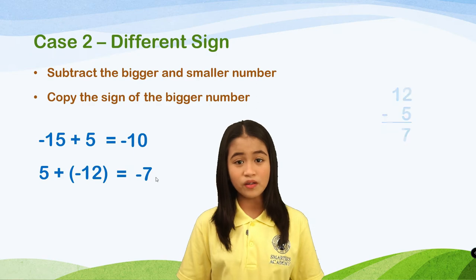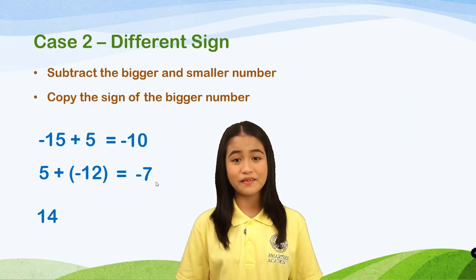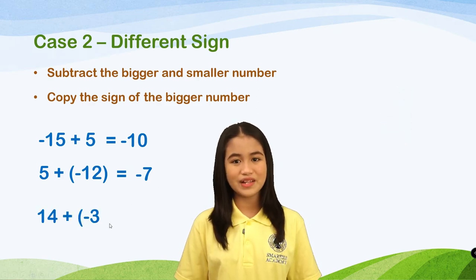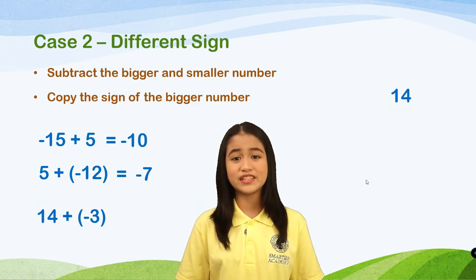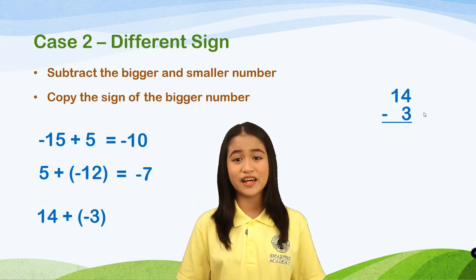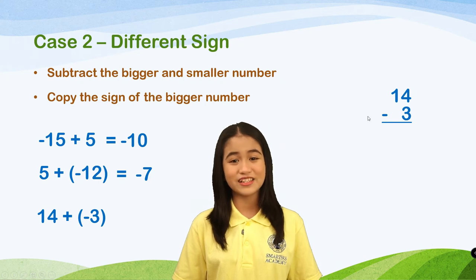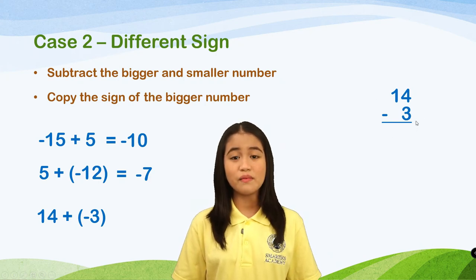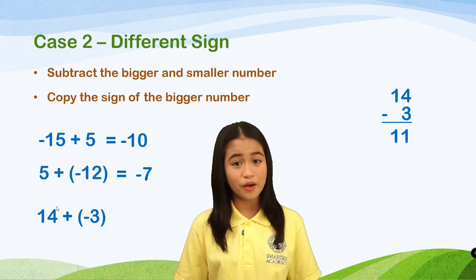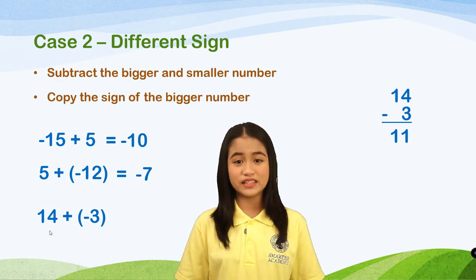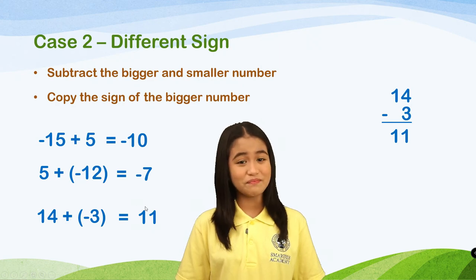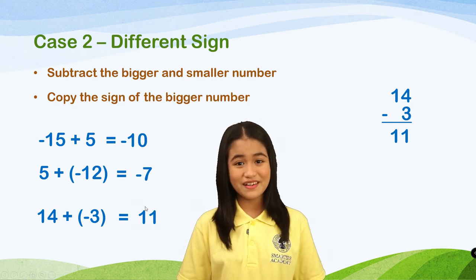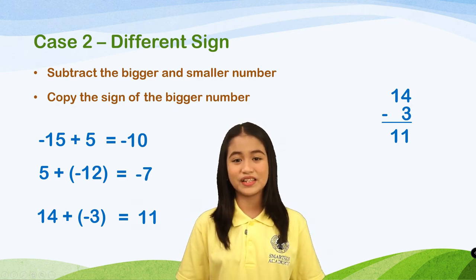Another example: 14 plus negative 3. What is the sign of number 14? There is no sign, but if you don't see any sign beside the number, it automatically means positive. So 14 minus 3 is 11. Then copy the sign of the bigger number — 14 is positive, so it's positive 11. But we don't have to write positive here because automatically it is read as positive.